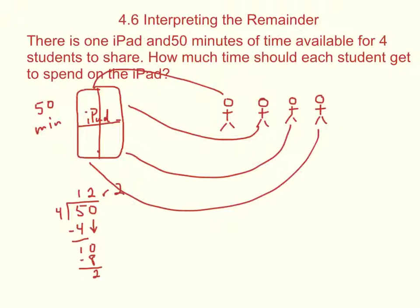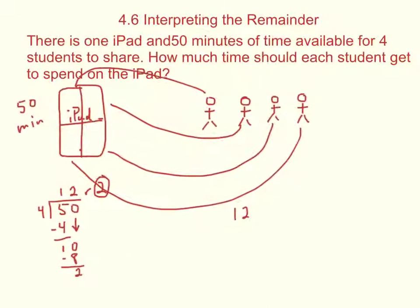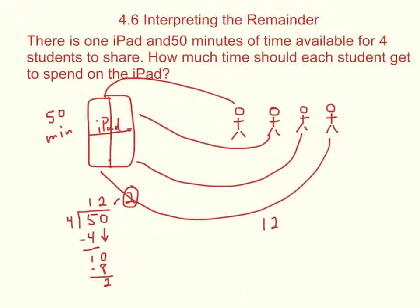Now, what exactly does this two here mean? Well, starting off, we divided the 50 minutes into four groups. So we have this 12 is 12 minutes. Each student will get to use it for 12 minutes. Let me erase some of these lines. I guess I can't erase the lines. I'll just have to write above it. So each student is going to get it for 12 minutes. 12 times four is 48. That means this two is the two minutes left over.